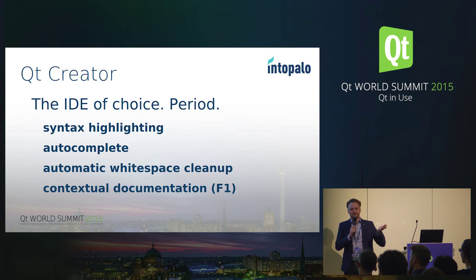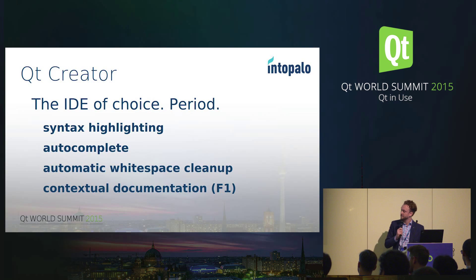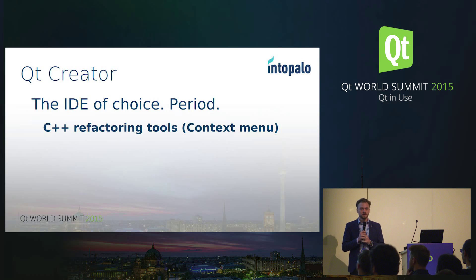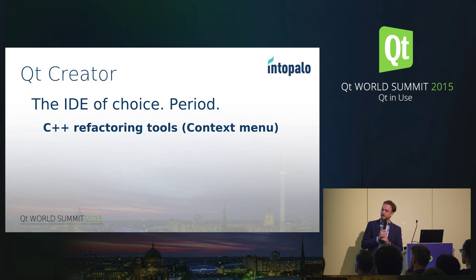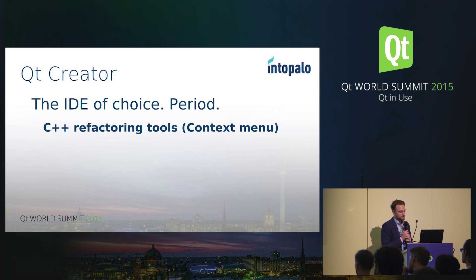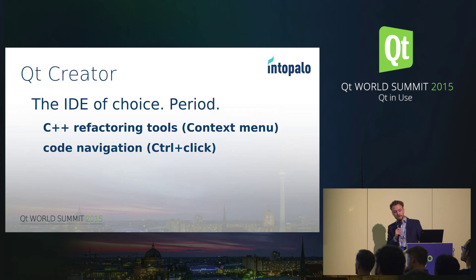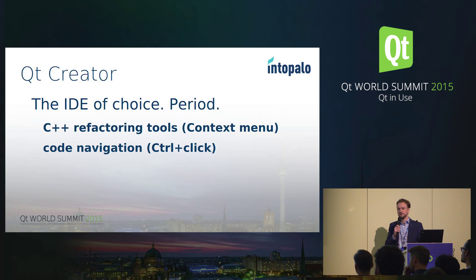I'm not using make files anyway — I'm using Qubes. Contextual help is awesome — F1. C++ refactoring tools: I like to use the rename symbol under cursor. That's my favorite — a lot better than find and replace. Stubbing out C++ implementations from your header is also really cool. Code navigation is great. Probably the number one reason I use Creator is that I can control-click on symbols and jump to the definition.